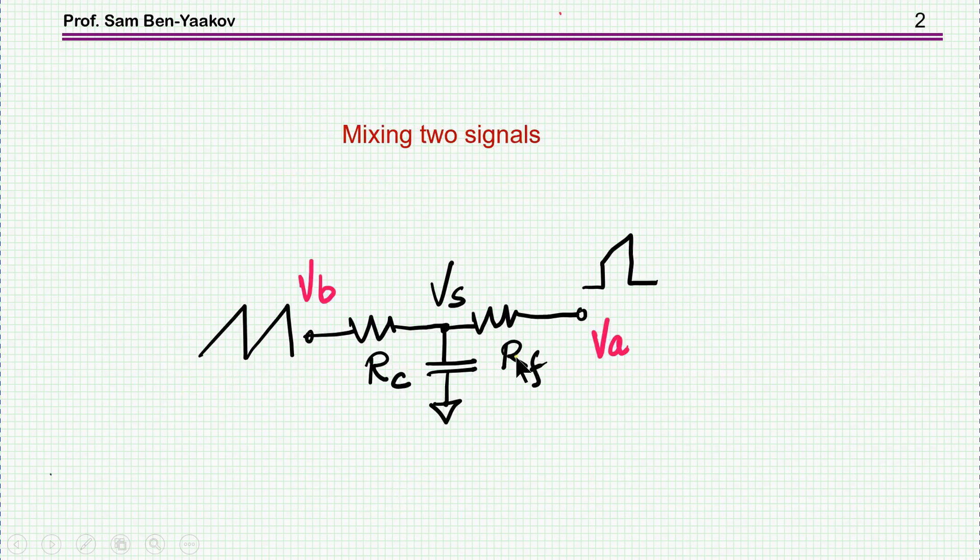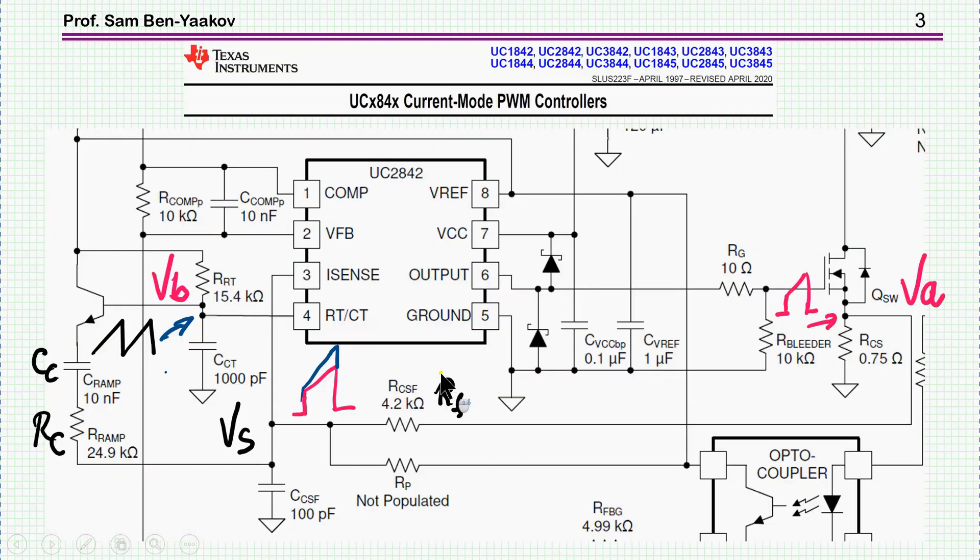The problem we're discussing is mixing two signals. Here is one signal, there is another signal, and we're doing it by having two resistors which by superposition are mixing these two to this point V_s.